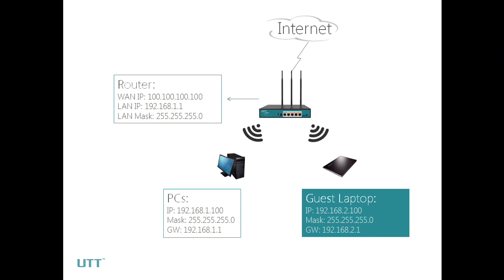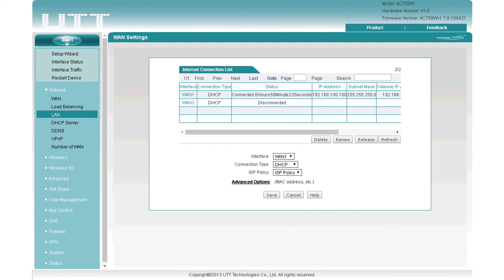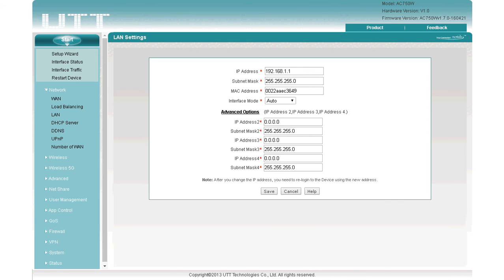Now let's address the question: how to manage two subnets with the UTT Business Router? From the topology, we know the router has WAN IP 100.100.100.100. First, go to the LAN page under Network and click Advanced Options. Set IP Address 2 to 192.168.2.1 and save.